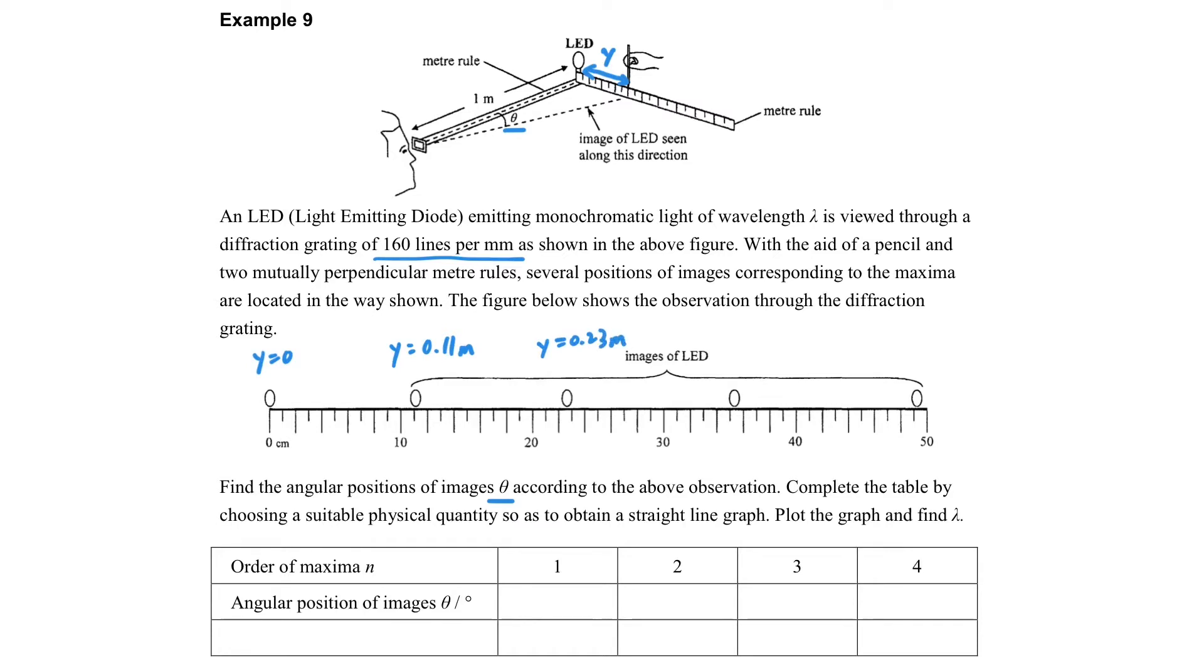It's just enlarging the meter rule. It states that it found the image of the LED at different positions along the meter rule. We can find the zero is the center, that's the position of the LED, and the filled circles are the images. The inner one is the n=1, the outer one is the order one image.